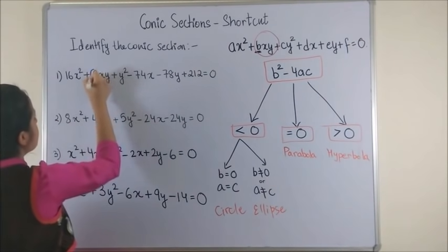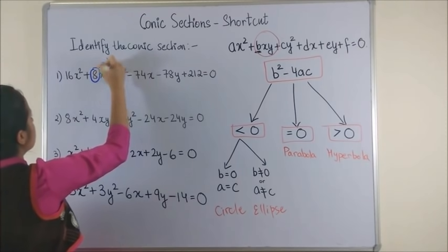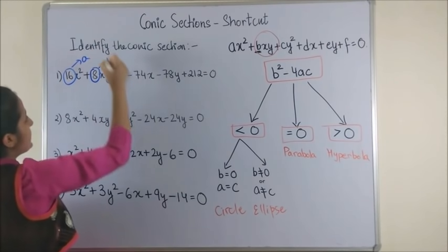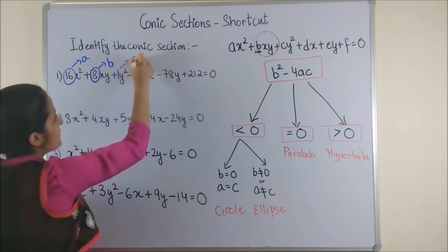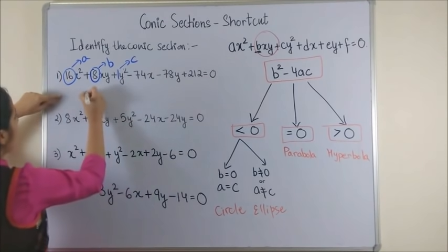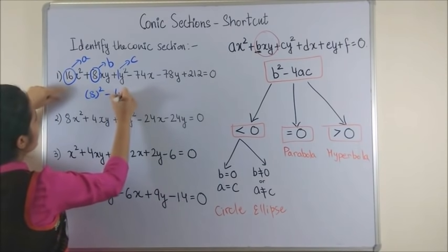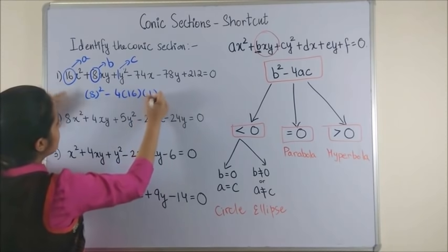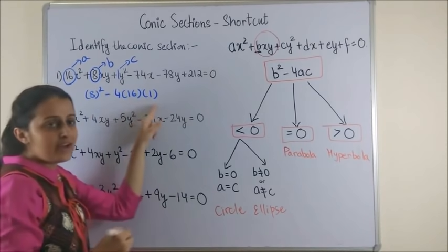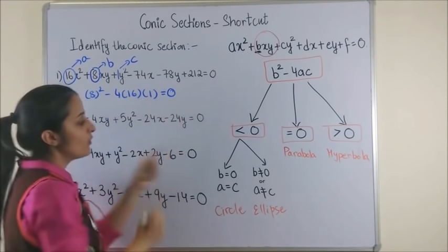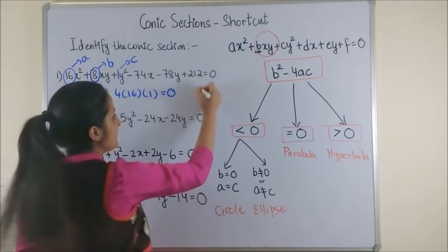So if you look at this, you know your b is 8, your a is 16, and your c is 1. So your b² - 4ac in this case becomes 64 - 64, which is 0, and thus we said the answer is a parabola.